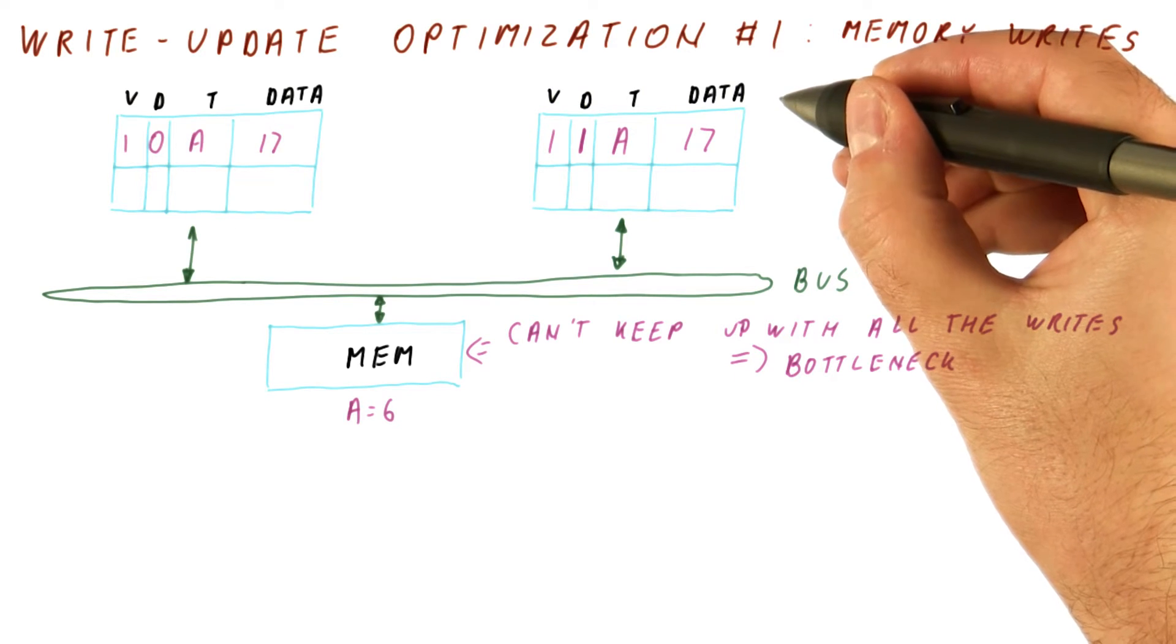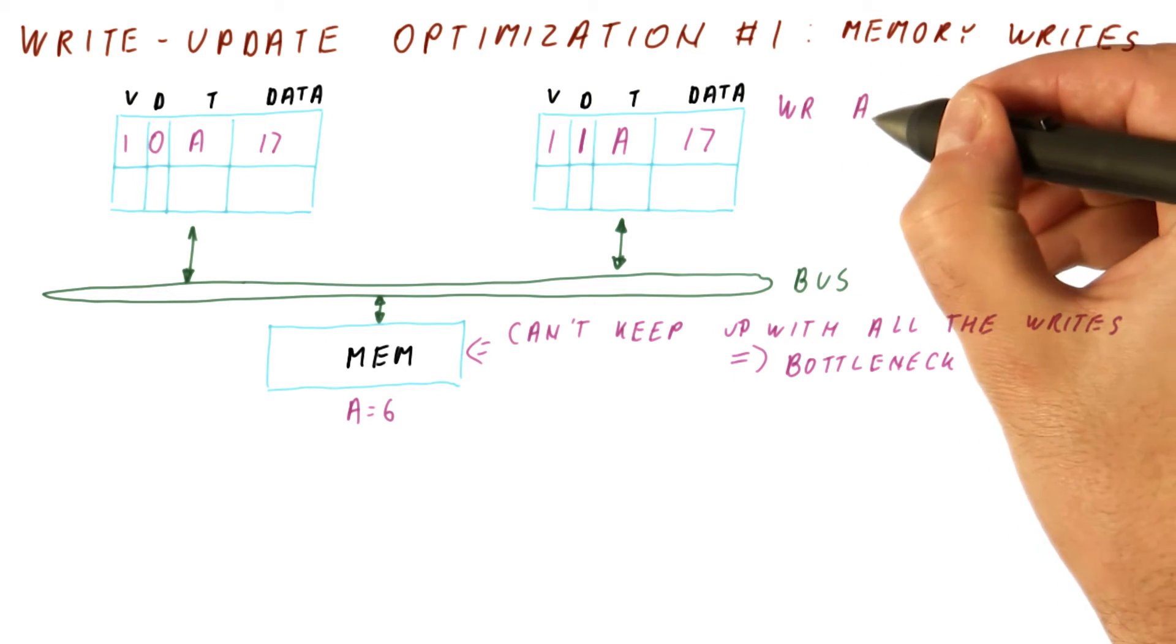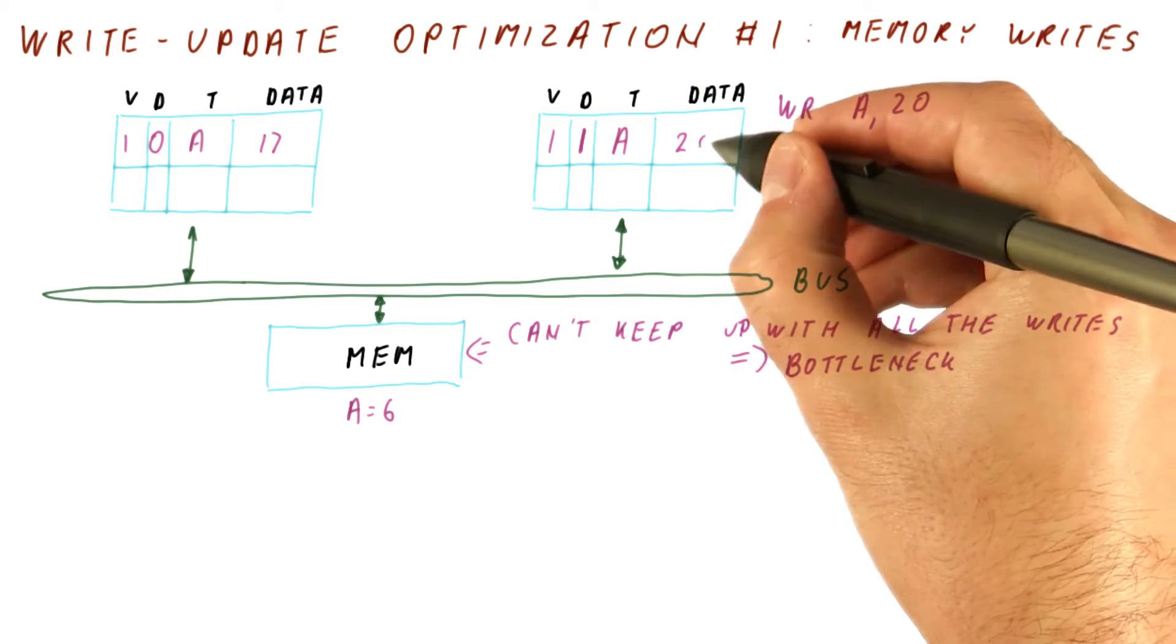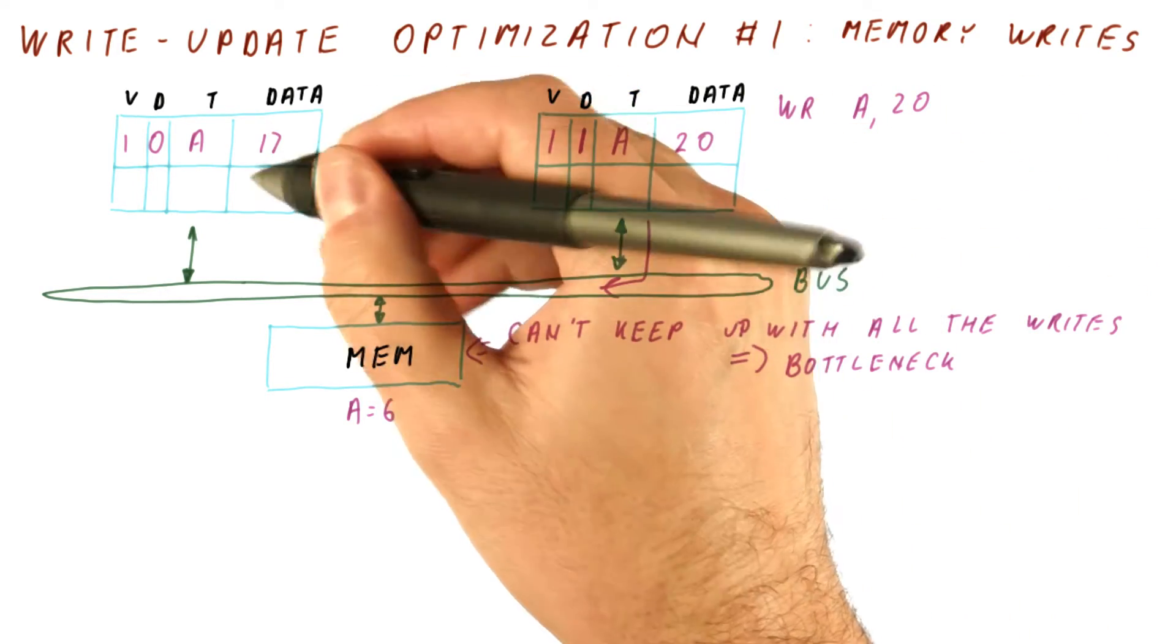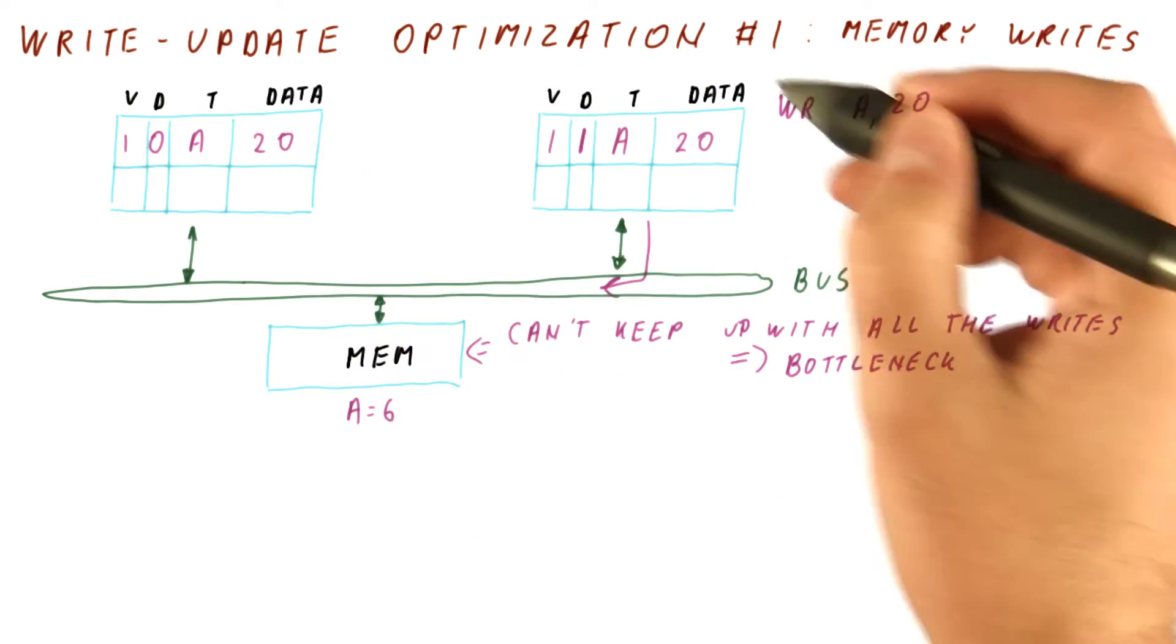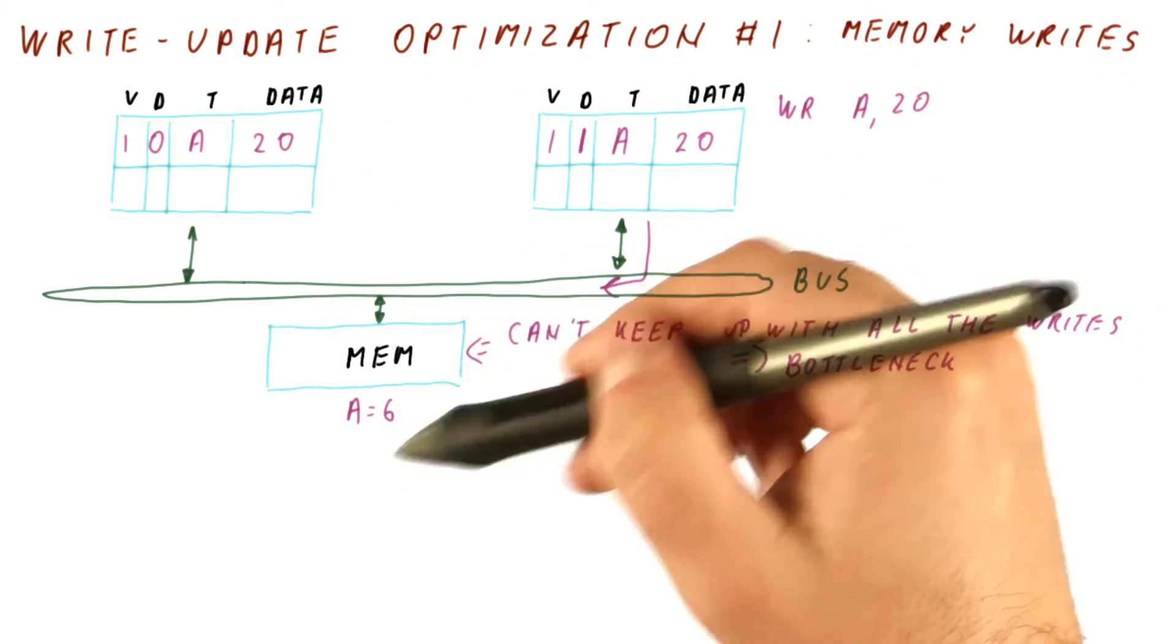Now after this, let's say that we write a new value here of, let's say, 20. We put the new value here. We broadcast the new value on the bus. The snooping here gets that 20, but the memory again doesn't get updated.